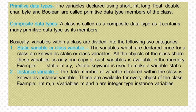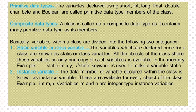The next topic is primitive data type and composite data type. Variables declared using short, int, long, float, double, char, byte, and boolean data types are called primitive data type members of the class. A class is a composite data type since it contains many primitive data types as its members. Composite data type is one which comprises primitive data types. The variables within a class are divided into two categories: static variables (or class variables) and instance variables.